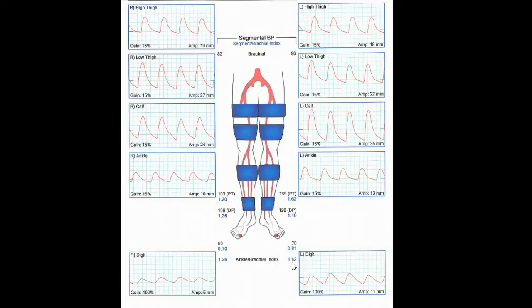Anything greater than 1.3 to 1.4, depending on the criteria that you use, is generally considered falsely elevated. So with an index of 1.6, this patient most likely has some artifactual pressures on the left side.